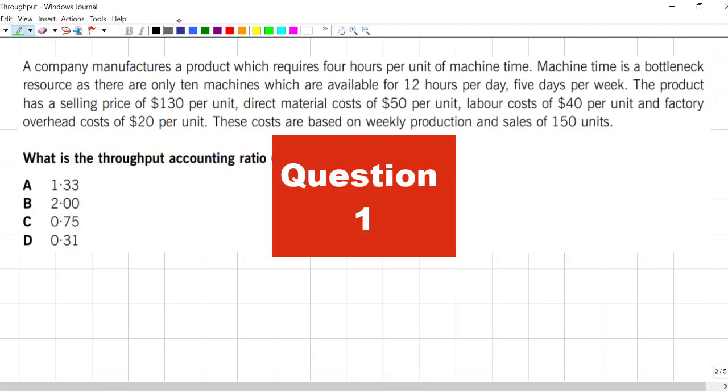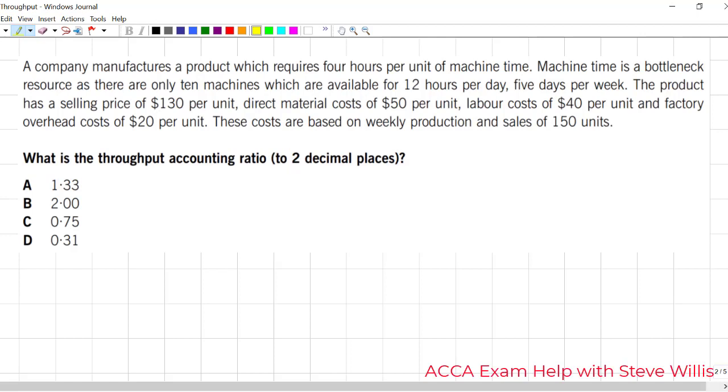Before I even attempt the first question in this set, I can tell that it's a difficult one. Why is that? Throughput accounting. That's the most difficult of the specialist management accounting tools, in my opinion, and I see a lot of figures buried in letters and words. This is going to take time to unpack. In the exam, this is an example of one that I would potentially flag and come back and do later, because I want to do the easier questions first.